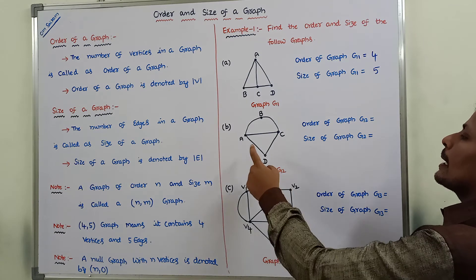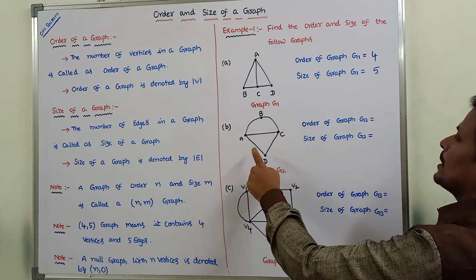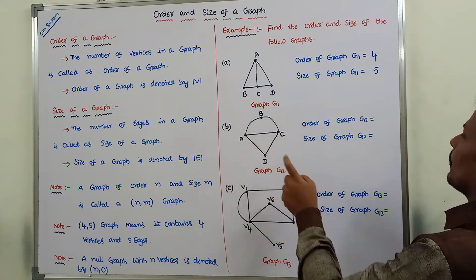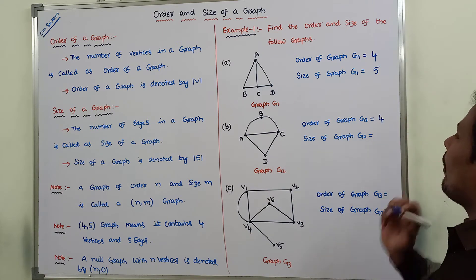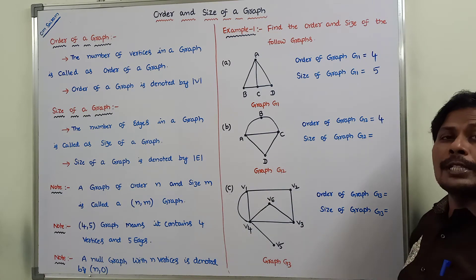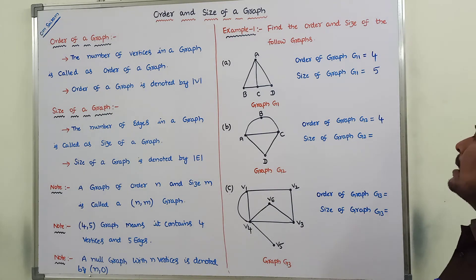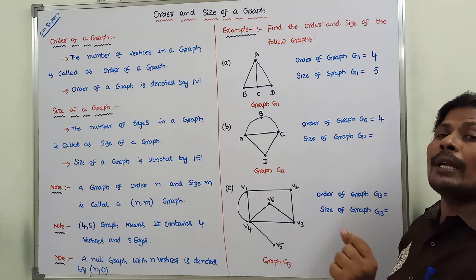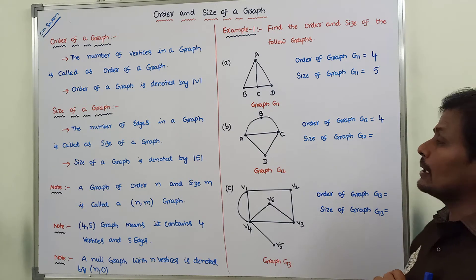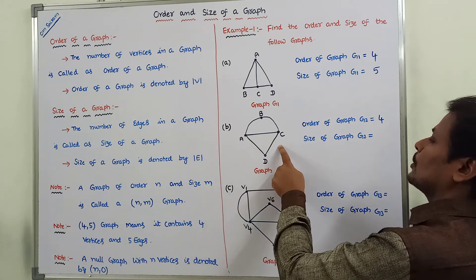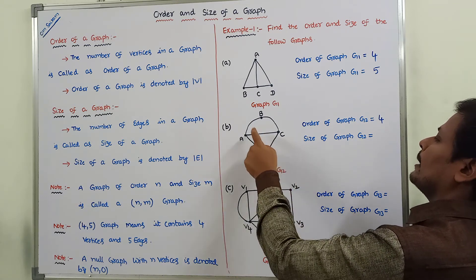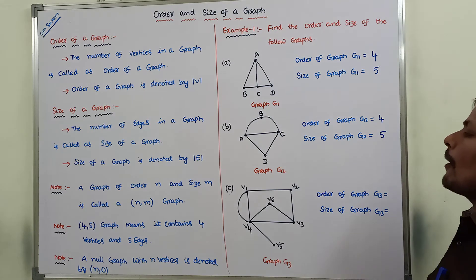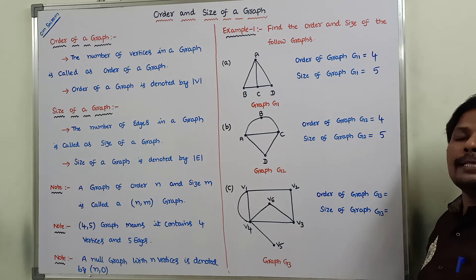Now consider graph G2. Order of graph G2 means number of vertices in graph G2: 1, 2, 3, 4. So order of graph G2 is 4. Next, size of graph G2 means number of edges present in graph G2: 1, 2, 3, 4, 5. So size of graph G2 is 5.